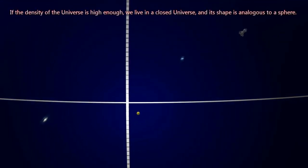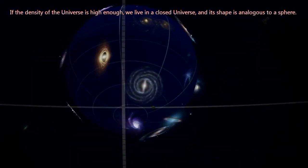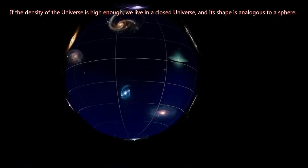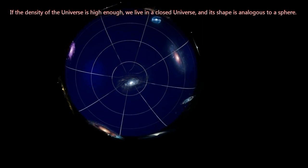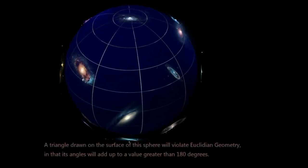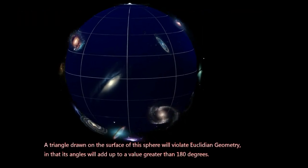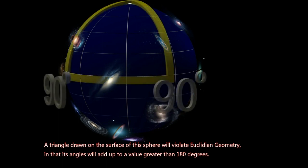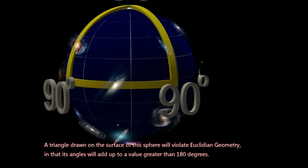If the density of the universe is high enough, we live in a closed universe, and its shape is analogous to a sphere. A triangle drawn on the surface of this sphere will violate Euclidean geometry, in that its angles will add up to a value greater than 180 degrees.